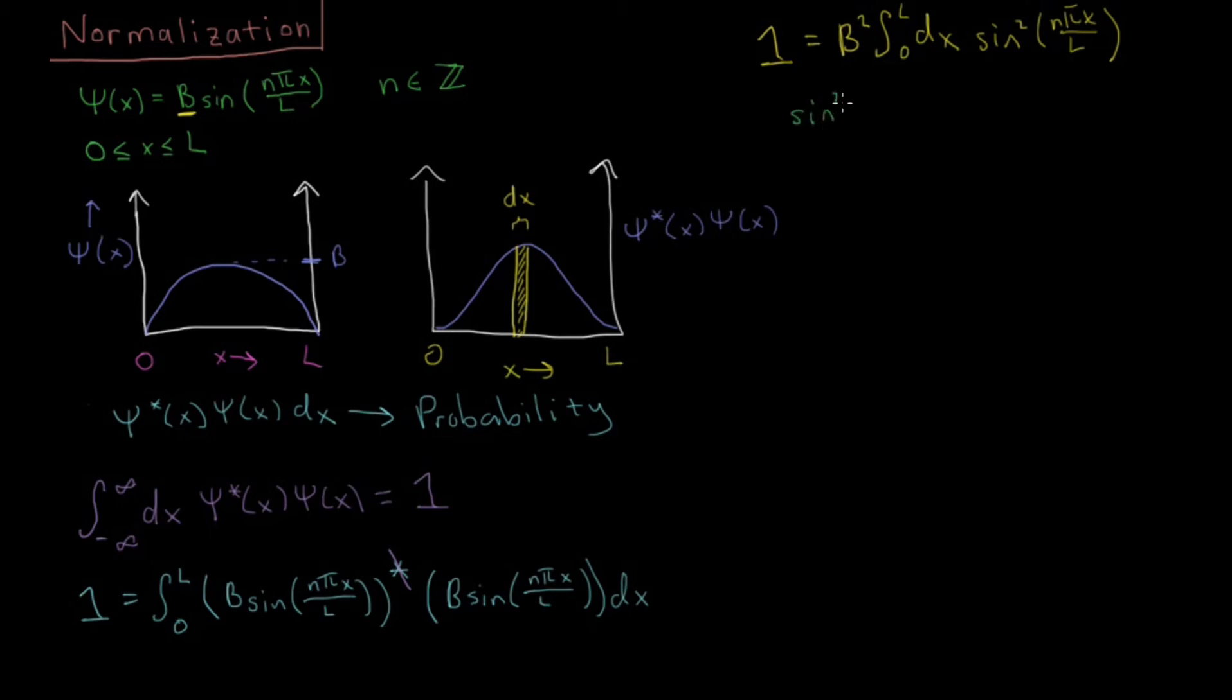You know that sine squared of kx equals one half times one minus cosine 2kx. If you're not convinced of that, just convert sine into its form with complex exponentials using the Euler identity, and you can prove this formula to yourself in five or ten minutes. If you're not convinced, just go ahead and do that exercise. But we'll just go ahead and move on.